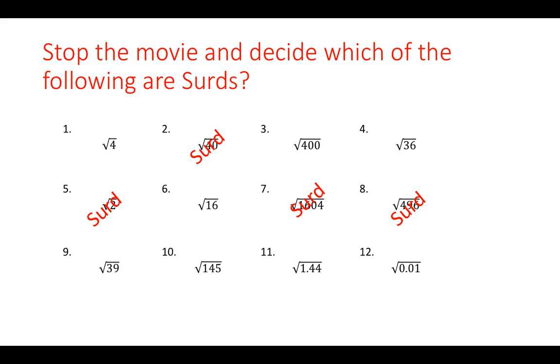Square root of 39, it's a prime number, so the square root of all prime numbers except for 1, which you can look out for yourself, is a surd. Square root of 145, now that's also a surd.